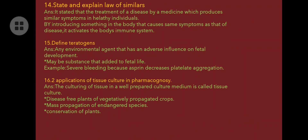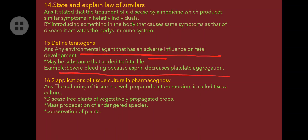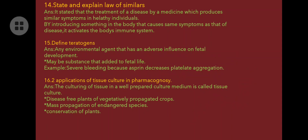Define teratogens. Any environmental agent that has an adverse influence on fetal development leading to abnormalities is called a teratogen. Example: aspirin — it decreases the aggregation of blood, so if blood aggregation does not occur, bleeding can happen during pregnancy.